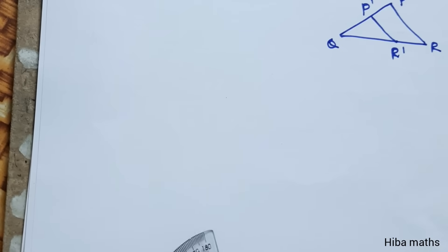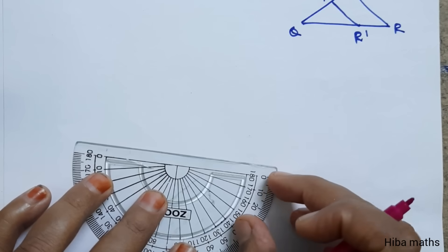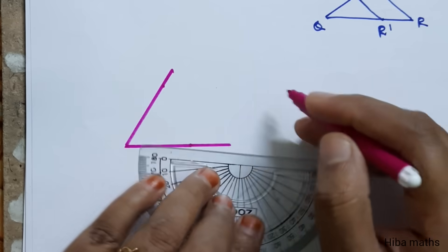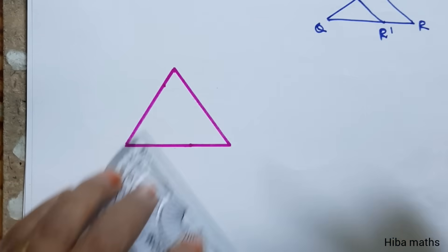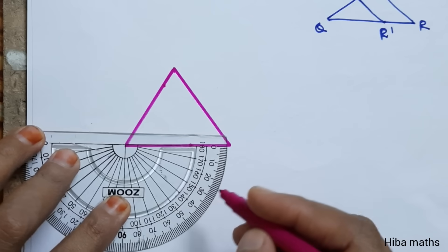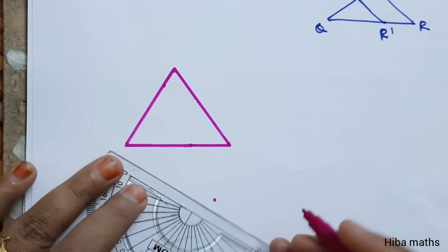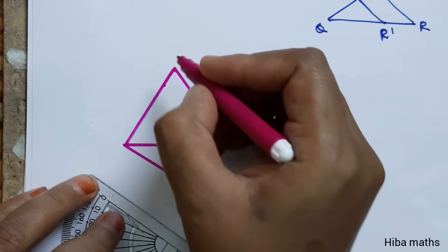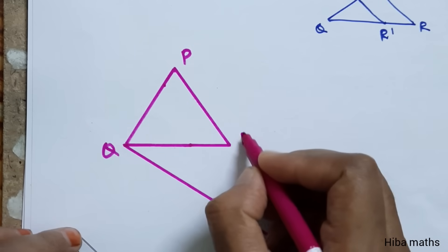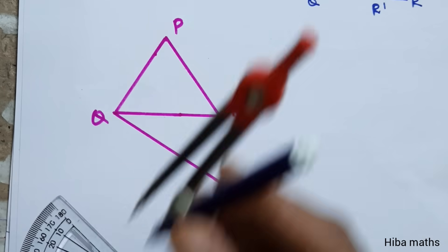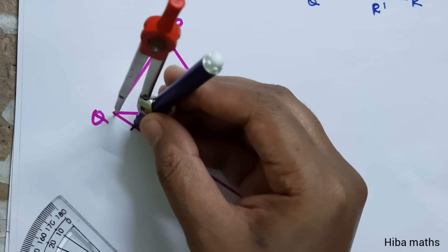Let's take the triangle. This triangle is our base. We draw an acute angle and add a ray. For the PQR construction with scale factor 3 by 5, we make 5 equal divisions of 1 cm each, marking points 1 through 5 along the ray.